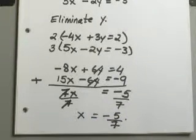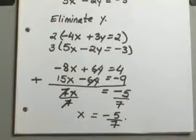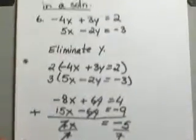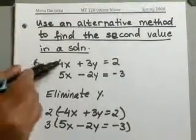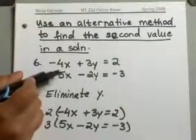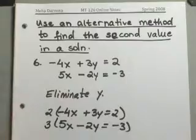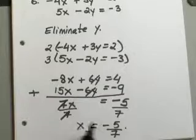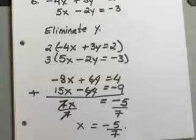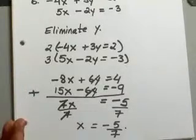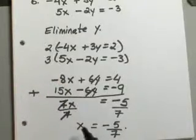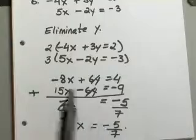For our x value, we ended up with negative 5 over 7. If you try to substitute this into any one of your original equations, that's just going to make it a little bit harder considering that your x is a fraction. So instead of substituting x, we will go ahead and eliminate one more time. This time, since we want to find the value of y, we will eliminate x.